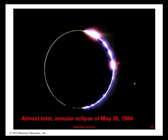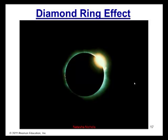Here's another beautiful picture of an almost total annular eclipse that was taken in May 30, 1984. And here is what we call the diamond ring effect. As the name implies, we have the little part that is sticking out almost like having a diamond ring.